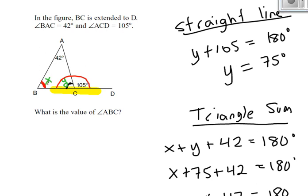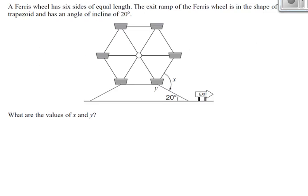Let's look at the next question. It says a Ferris wheel has six sides of equal length. The exit ramp of the Ferris wheel is in the shape of a trapezoid and has an angle of incline of 20 degrees. What are the values of X and Y? They've already given us X and Y, so I don't have to label them myself. But there might be other angles that need a label, so I'll probably use Z if that happens.